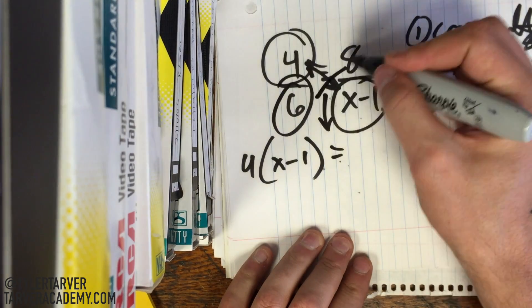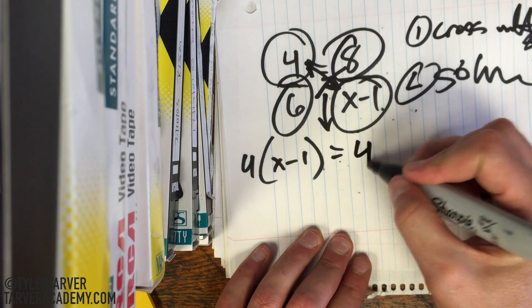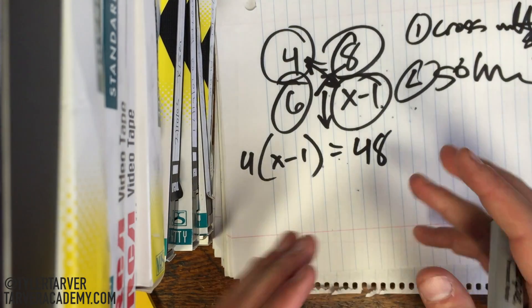And then we cross-multiply here. 6 times 8 is 48. Boom. So, now we just got to solve it.